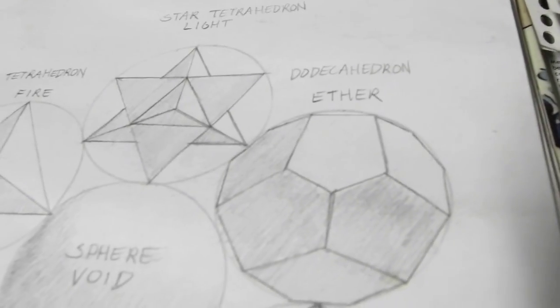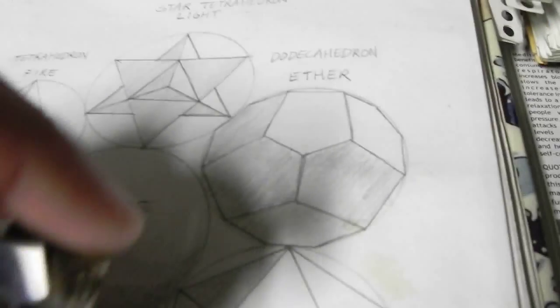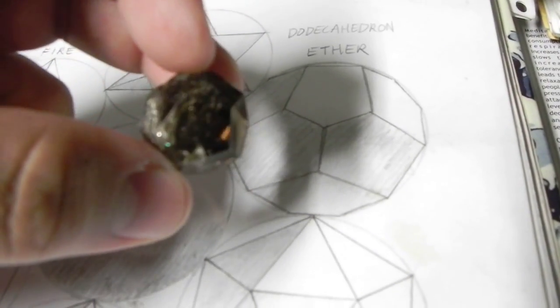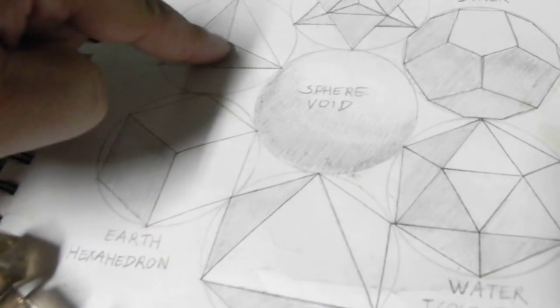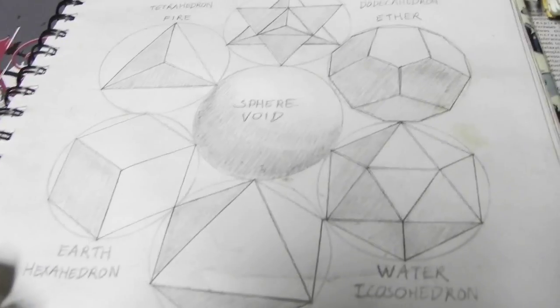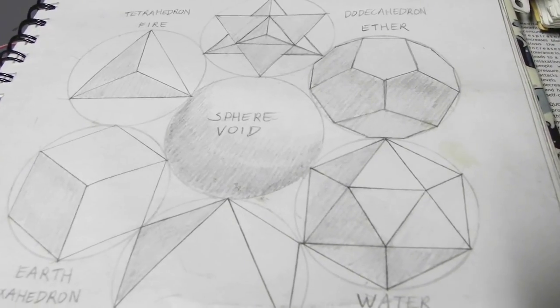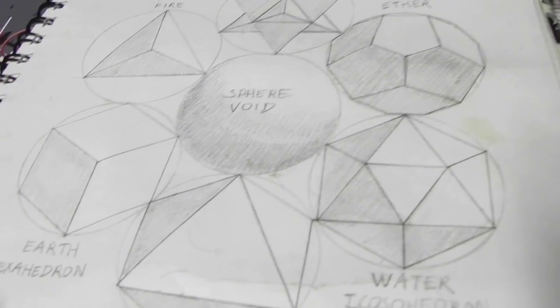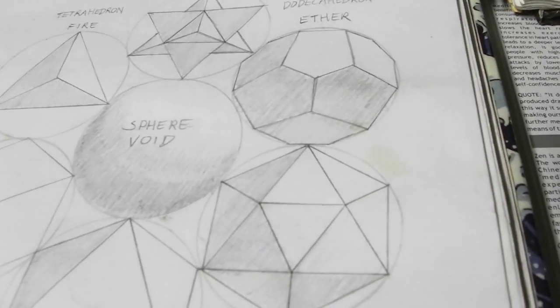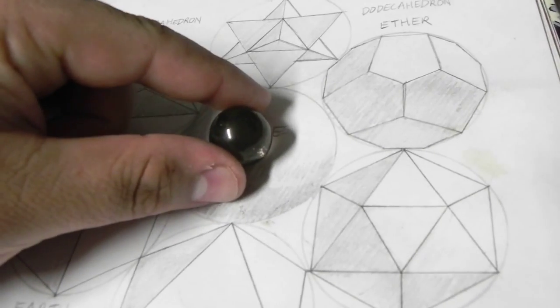And next one is the dodecahedron, which represents prana or ether. All of these solids from here, the five originals, these are Plato's solids. These are the platonic solids. And all five of them were considered sacred many years ago in the Greek mystery schools. And these are basically the elements. Oh, I'm sorry. I forgot about one last one. The sphere is the void.